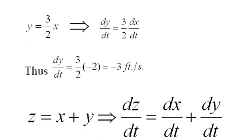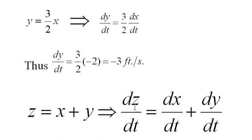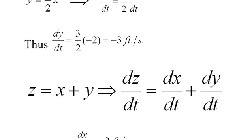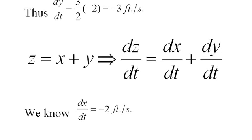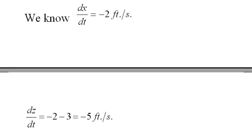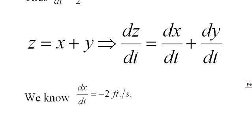And we know z equals x plus y. So dz/dt equals dx/dt and dy/dt. Well, dy/dt we just found, and dx/dt is negative 2 given from the problem. So that's what I just said. dx/dt is negative 2. We know that. That was from the problem. So dz/dt equals negative 2 minus 3, which is negative 5 feet per second. There's dz/dt up there, right?